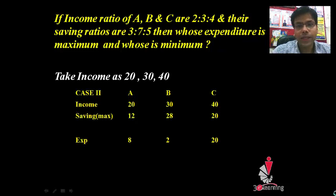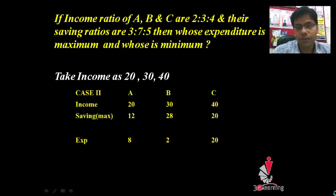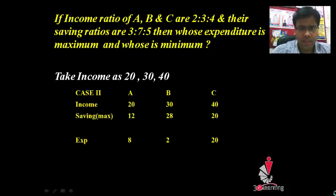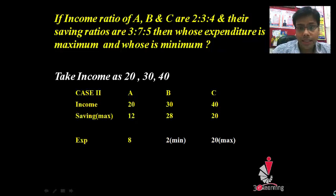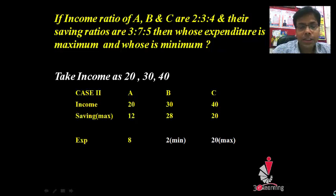So we have to work on Case 2. In Case 2, savings become 12, 28 and 20 — the maximum savings without making expenditure negative. So expenditure becomes 8, 2 and 20 respectively for A, B and C. By analyzing again, we can say B has the minimum expenditure and maximum expenditure is of C.